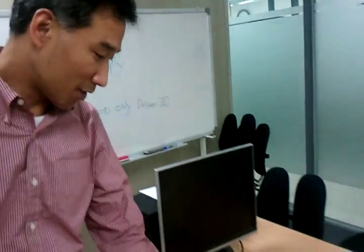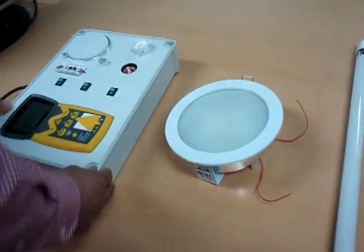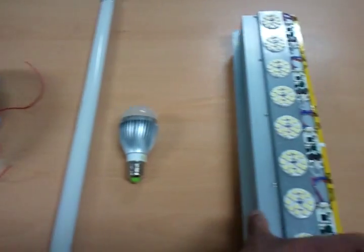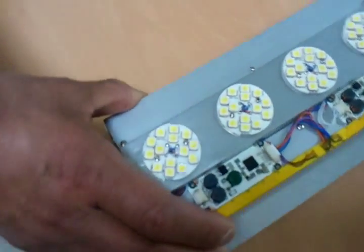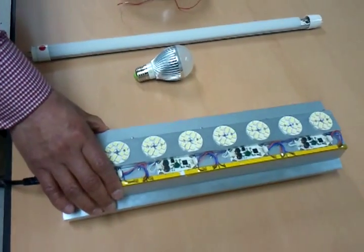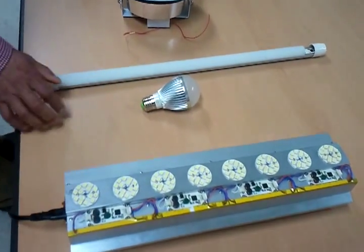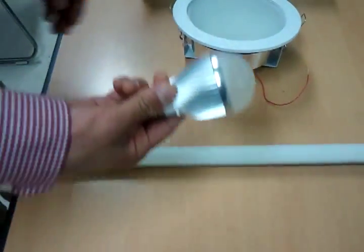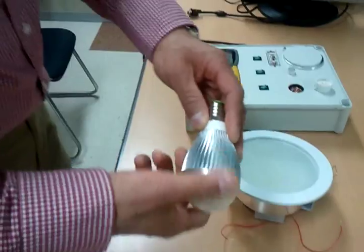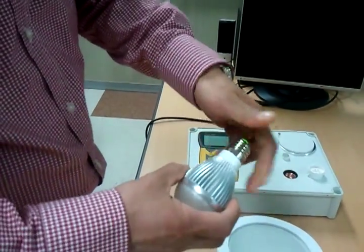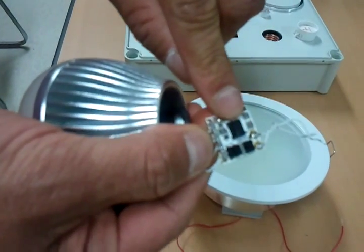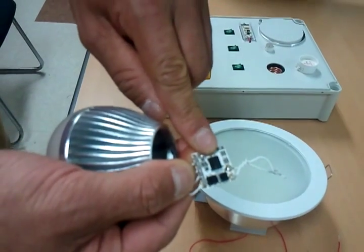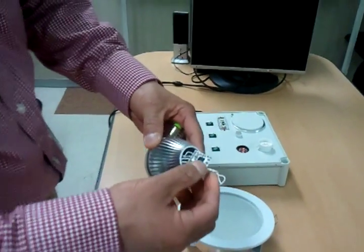Now we are showing our technology products. The first one is the high power lighting — this one is 120 watt. You can use it for street lighting or security lighting. The other one is the bulb style, which is a normal style application. We can also show you the technology like this one — this is our key IC technology. You can use a very simple driver for the LED.